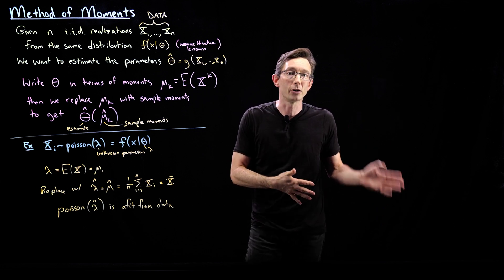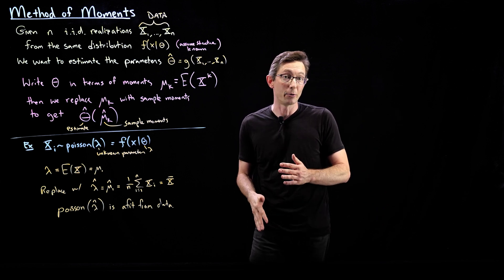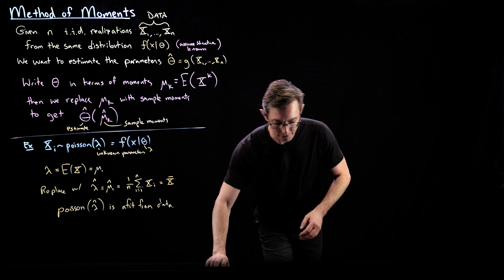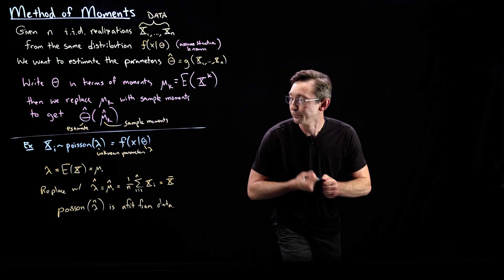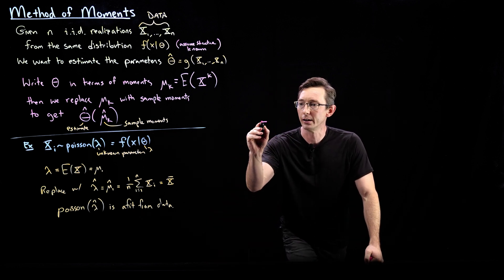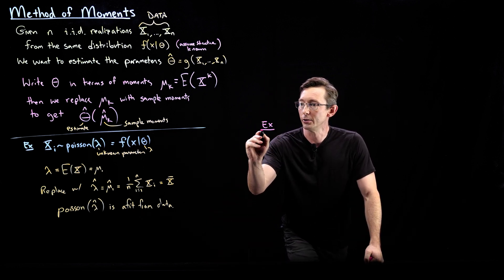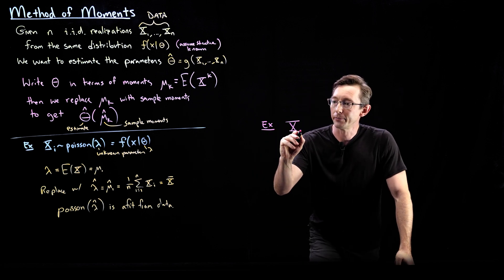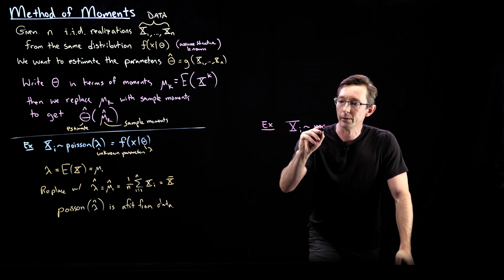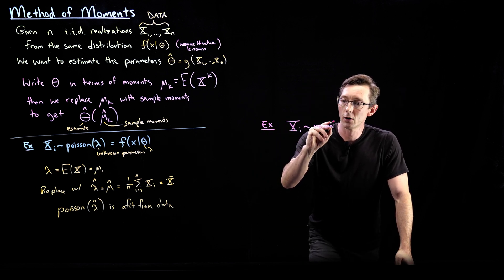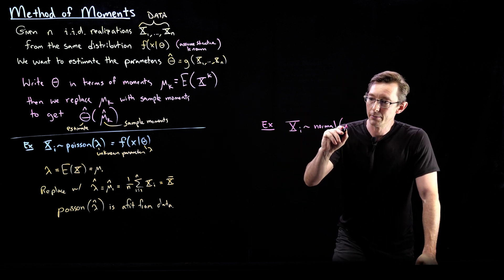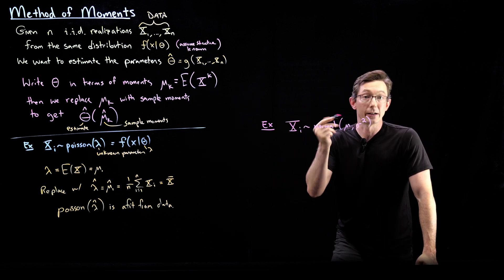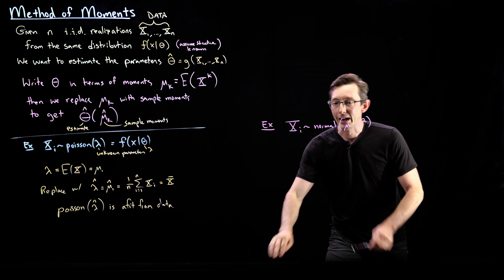How fast these estimates converge is an important question we'll ask later. Now for example two: the normal distribution. We say x_i is Normal with mean mu and variance sigma squared.